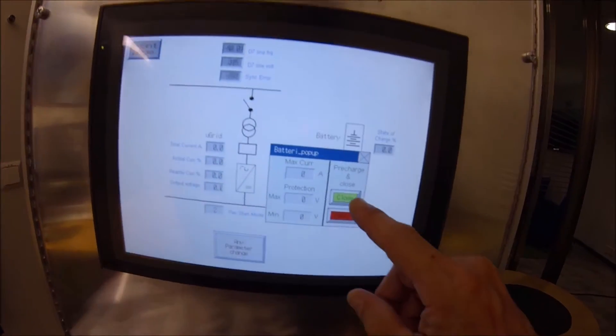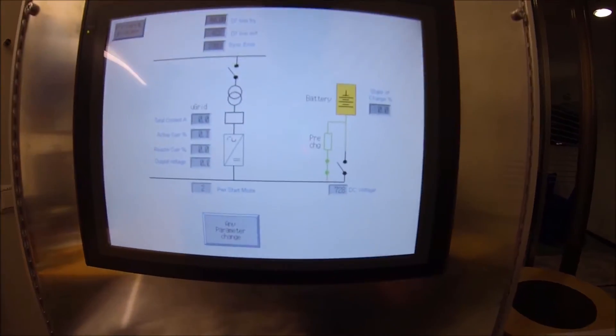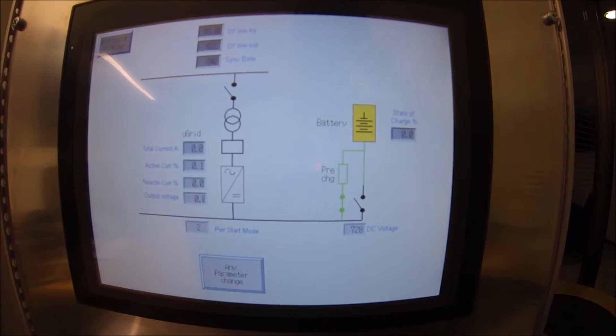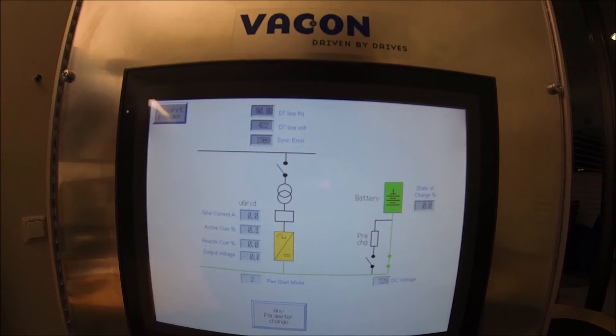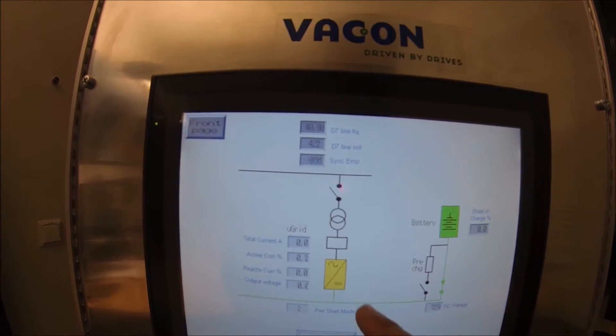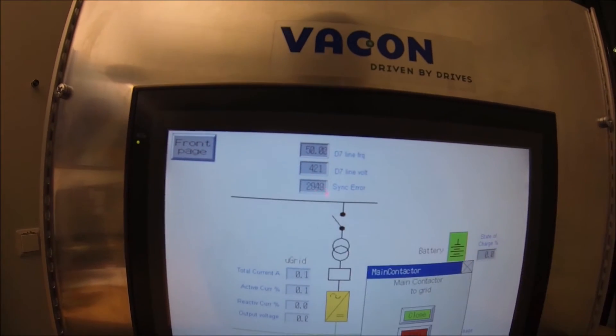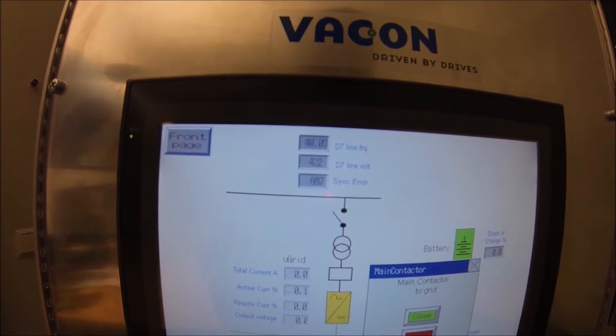First we pre-charge the drive, and there are two ways of doing this. Now when the drive is charged we could just connect it to the grid.